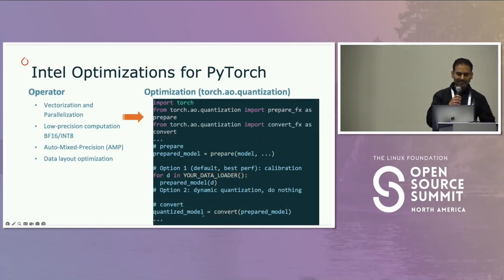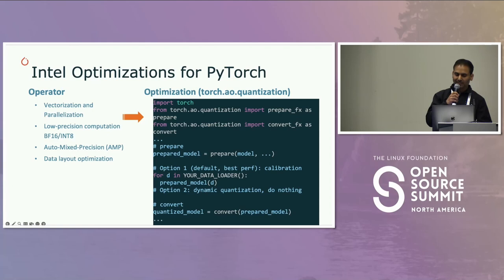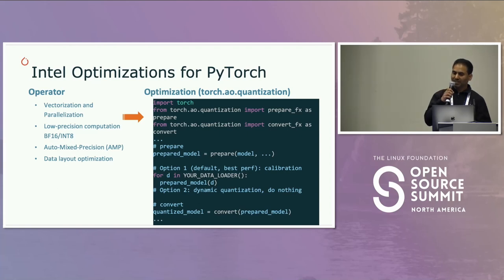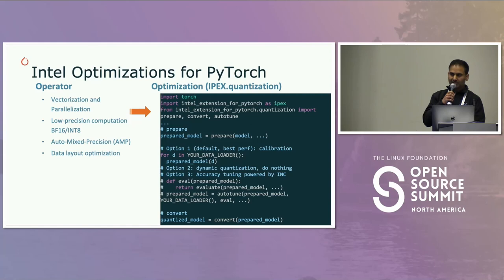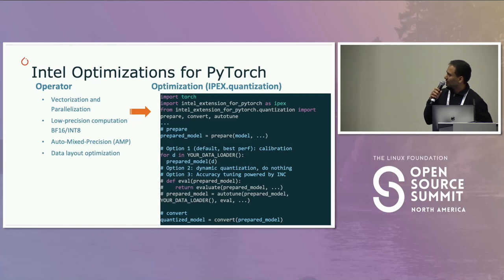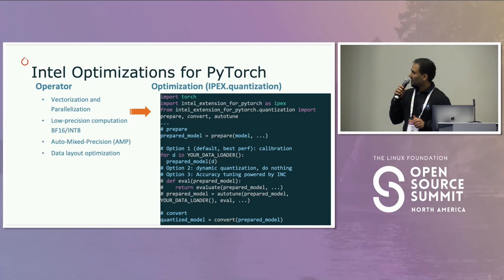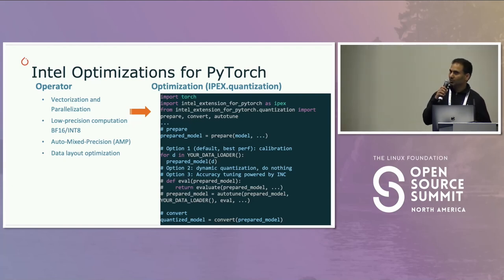Quantization: this is the typical flow in upstream PyTorch — a prepare step, then a calibration step for static quantization, or for dynamic quantization you don't have to do anything, then you convert. With IPEX, the flow is similar but we also integrated our Intel Neural Compressor low-precision library. Through the auto-tune feature, you can enable that with option three. We have prepare, convert, and auto-tune available through IPEX — so you can import that and enable these three steps to benefit from auto-tuning from Intel Neural Compressor.